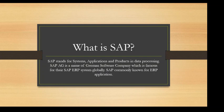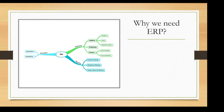ERP stands for Enterprise Resource Planning. The 'E' represents the organization or corporation or company. 'Resources' could be logistics — a company could have inventory, plants, distribution centers, employees, and finance. These are just a few examples of resources. 'Planning' of those resources could include inventory planning and warehouse planning.